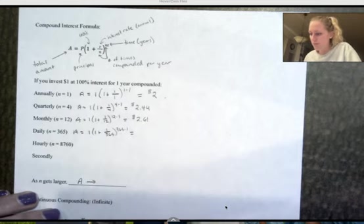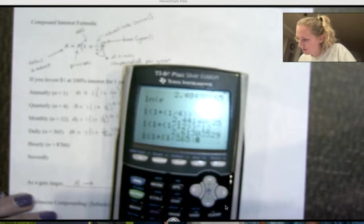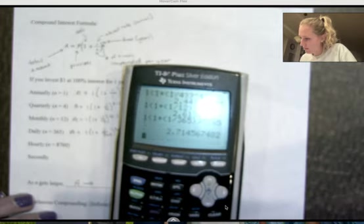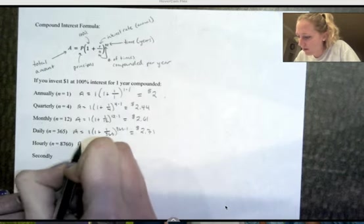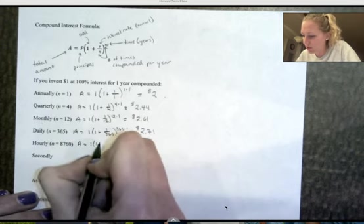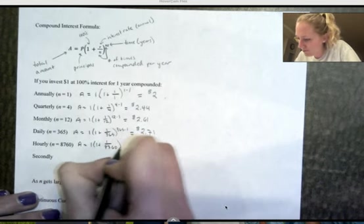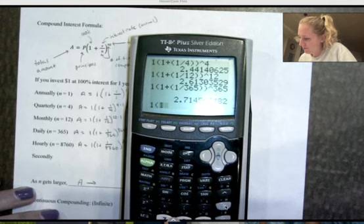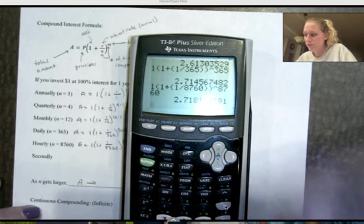Everything stays the same. We have 1 times 1 plus 1 divided by 365 raised to the 365th, $2.71. And let's try one last one. So it's going up, but it's not increasing at a crazy rate like you might think it is. If I compounded hourly, so every hour my interest is compounded, it's almost identical.